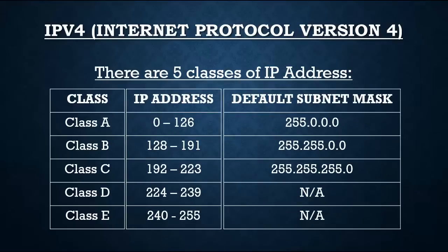Class A IP address starts from 0 to 126 and its default subnet mask is 255.0.0.0. Class B IP address starts from 128 to 191 and its default subnet mask is 255.255.0.0. Class C IP address starts from 192 to 223 and its default subnet mask is 255.255.255.0. Class D IP address ranges from 224 to 239, and Class E IP address starts from 240 to 255. Class D and Class E do not have any default subnet mask.